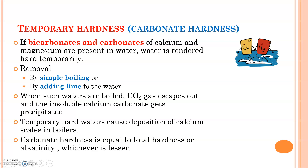The alkalinity value is less than the total hardness because bicarbonates and carbonates of calcium represent the alkalinity. Whenever the alkalinity value is lesser, we take that alkalinity value as the carbonate hardness. If the total hardness is less than the alkalinity value, then we take that total hardness as the carbonate hardness value. Whatever remains — that is, total hardness minus alkalinity — represents the non-carbonate hardness.